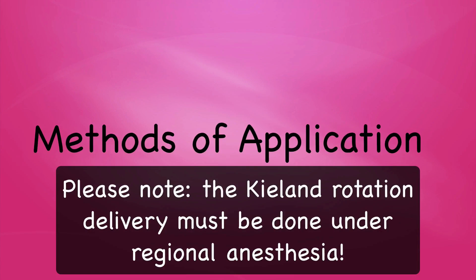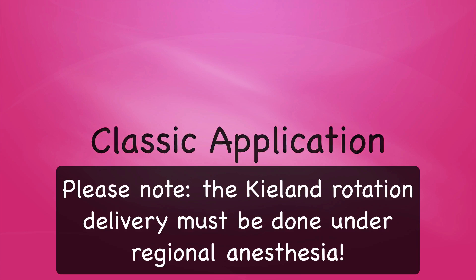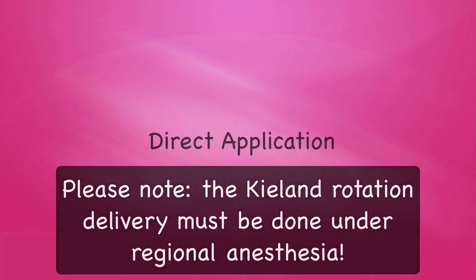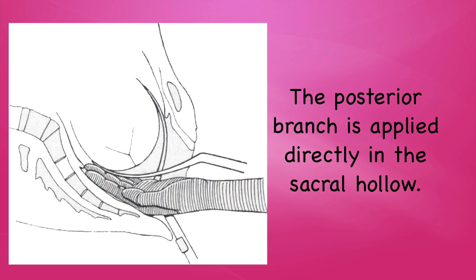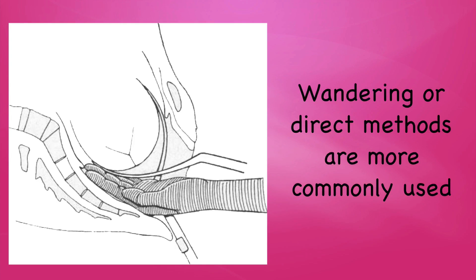The anterior branch of the Kielland's forceps can be applied in three ways: the classical application as described by Kielland, the wandering method, and direct application. The posterior branch is applied directly in the sacral hollow. Most obstetricians now use either the direct or wandering method of application in preference to the classical method.